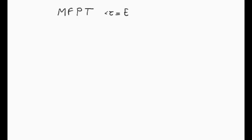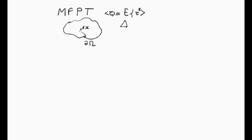The mean first passage time is τ, which is the expectation of the time it takes, when you have a domain and a particle started at point x, and you look at what time it takes for the particle to exit at the boundary of the domain, knowing that you started at position x. We recall from last time the equation for τ(x): d·Δu = -1 for pure Brownian motion, where d is the diffusion coefficient, and u = 0 on the absorbing boundary. This is u(x).